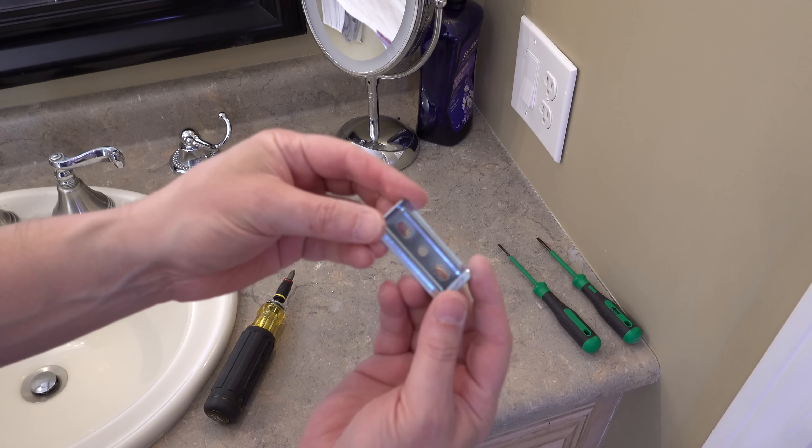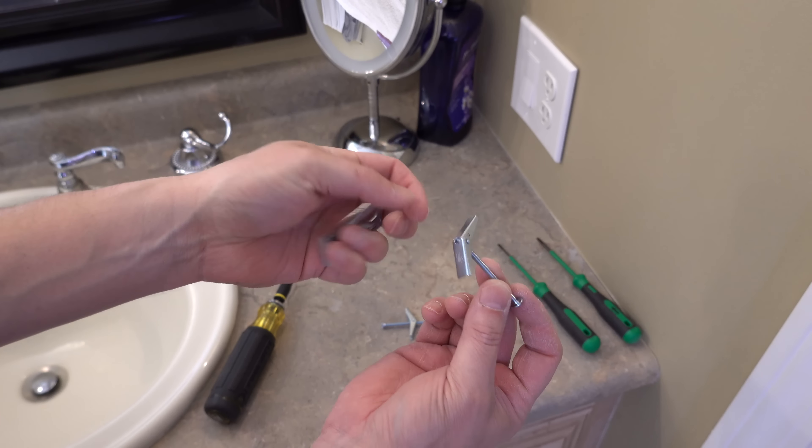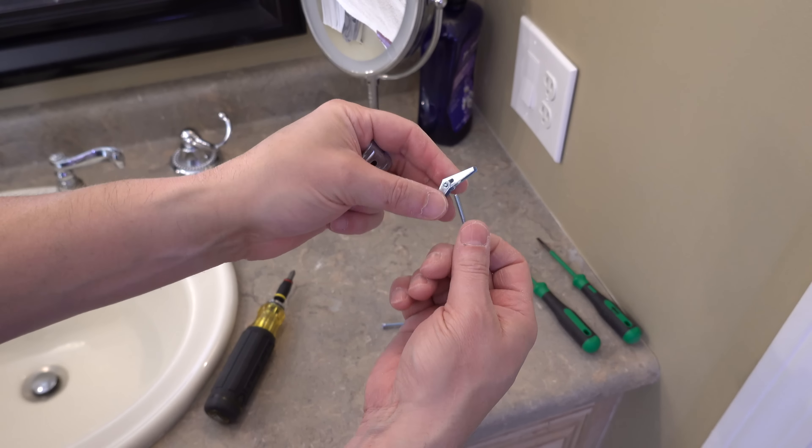Toggle bolts come in different sizes but the ones you're looking at here are the 1/8th of an inch model and these are going to work perfectly and allow me to reuse those existing holes.